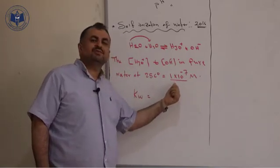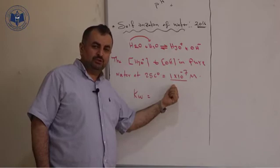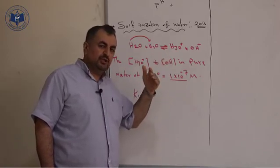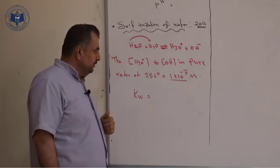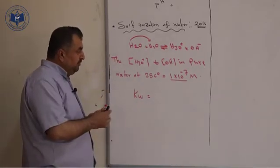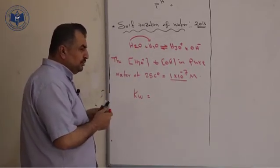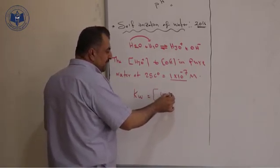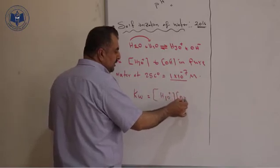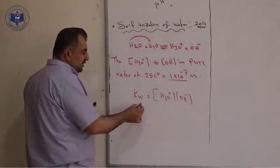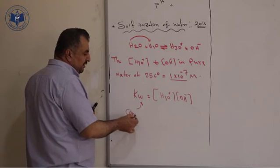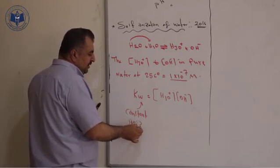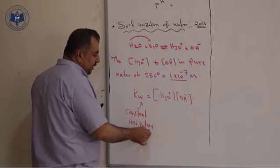This number is always directly proportional to temperature. When the temperature rises and increases, the concentration will increase, and by decreasing temperature the concentration will also decrease. The first rule in this chapter: KW equals concentration of hydronium multiplied by concentration of hydroxide. KW means constant ionization of water.